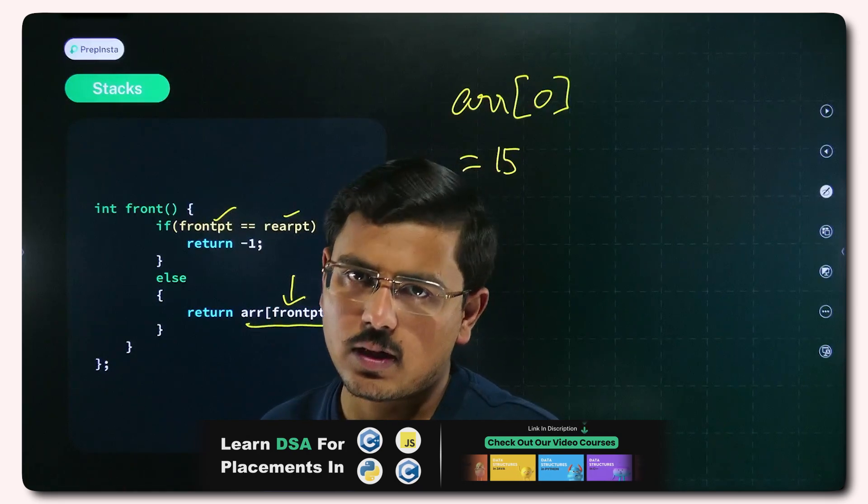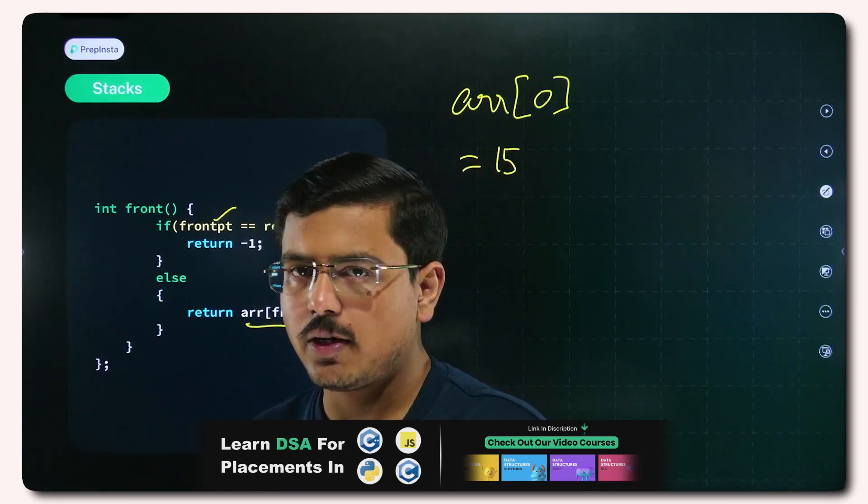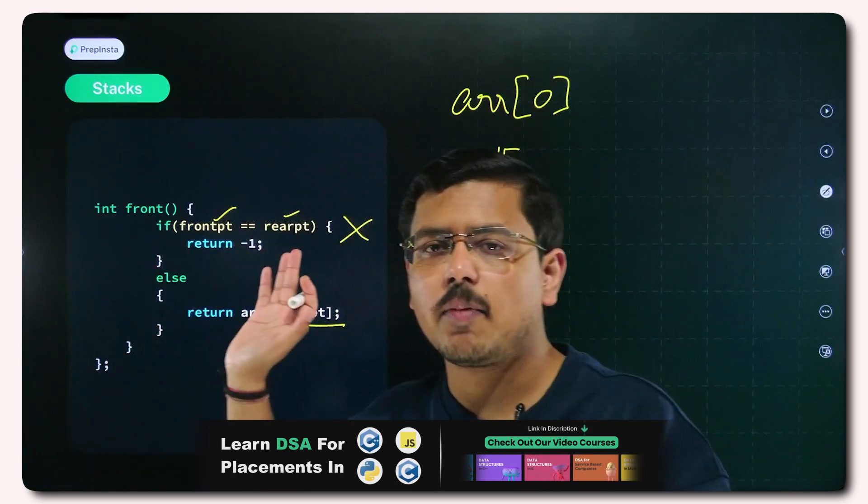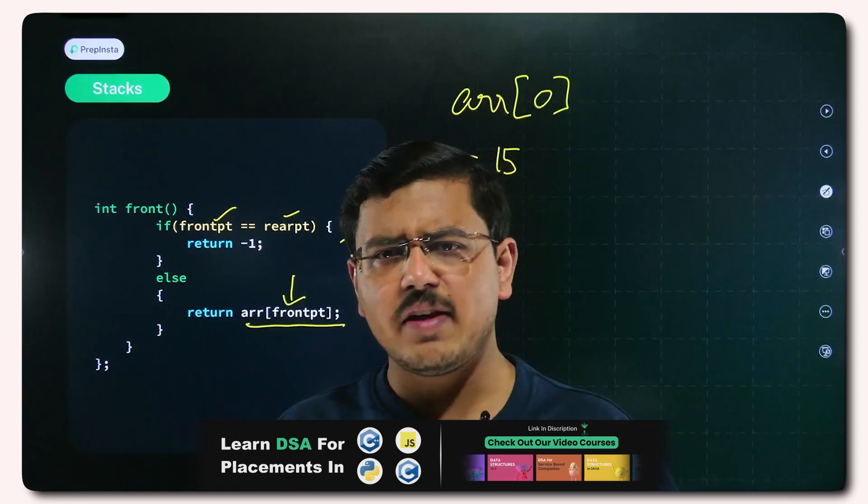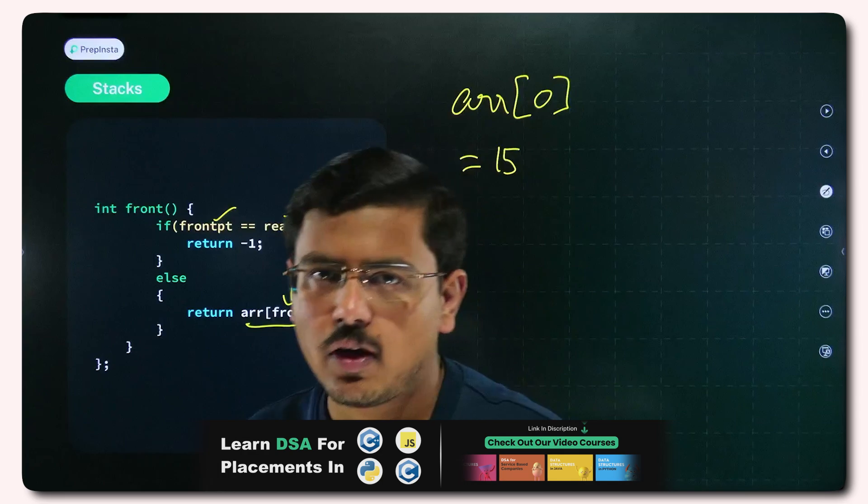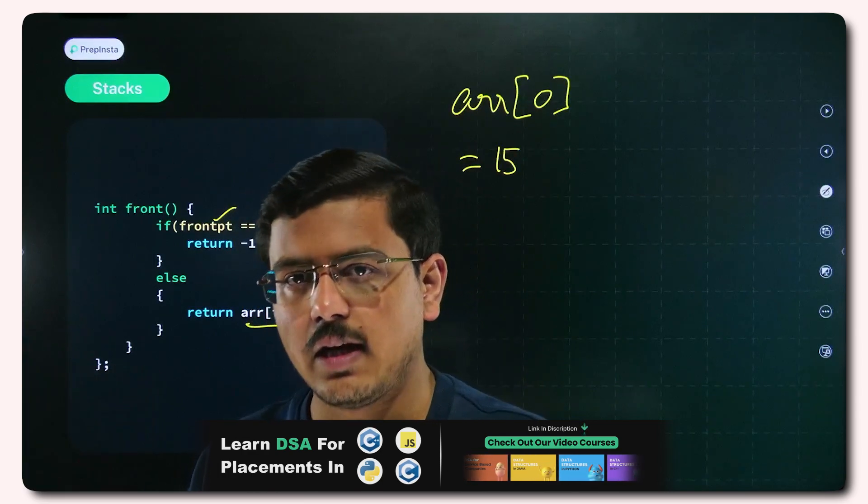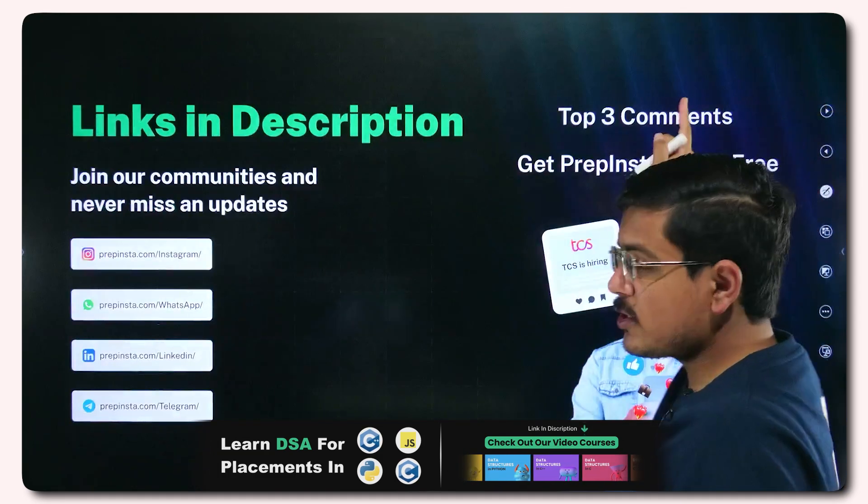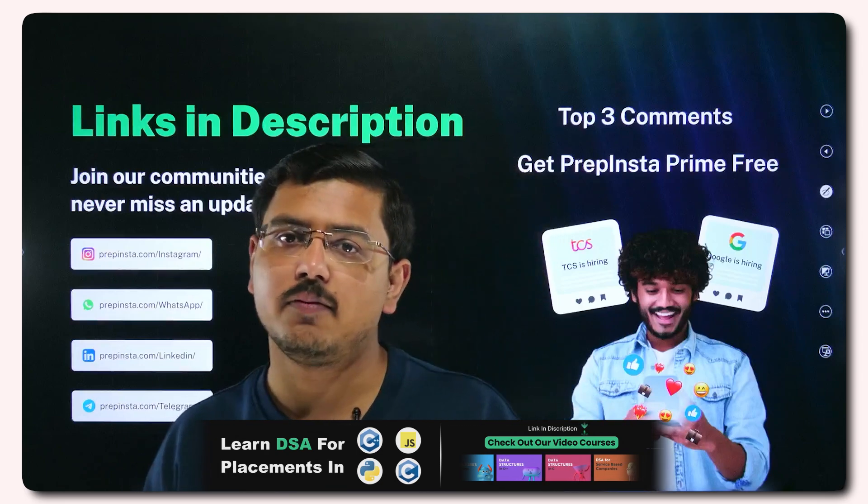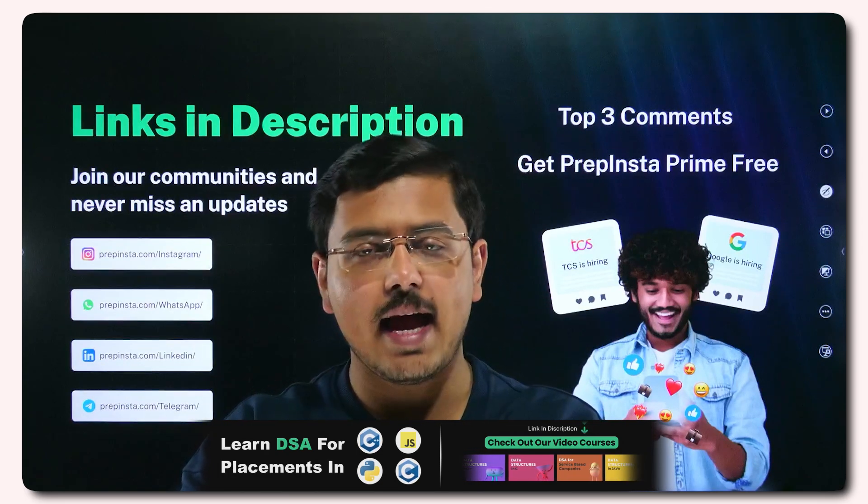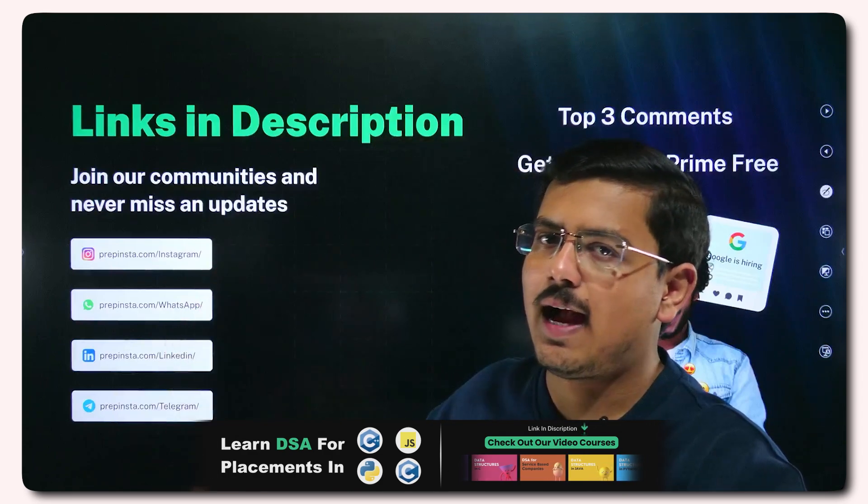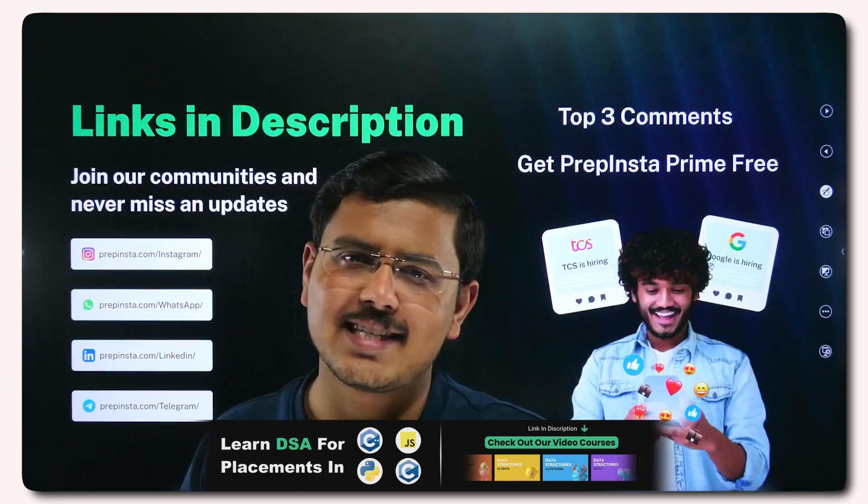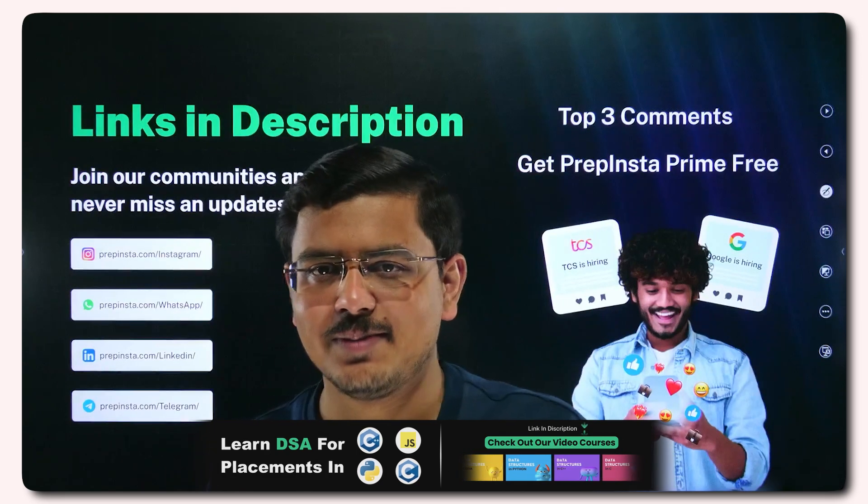We will understand in further videos the advanced topics of queues, we will do some problems on it. But right now understand the correctly implemented code of the queue. This is a very simple implementation and this will help you out further. Practice this once yourself. If there is any doubt, tell me in the comment section so that I can solve that for you. Because top three comments might stand a chance to win the Prep Insta Prime subscription for free. So do not miss out on that chance. Go ahead, follow us on these social media handles so that you never miss any hiring update from our side. Have a wonderful day ahead. As I always say, keep doing good, good comes back to you. Thank you.